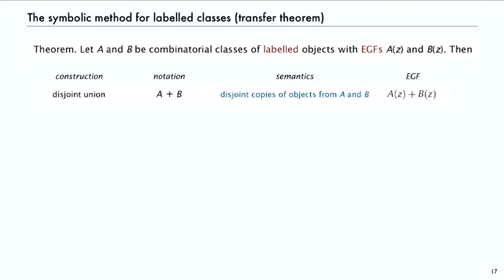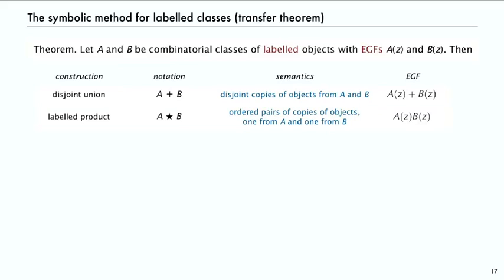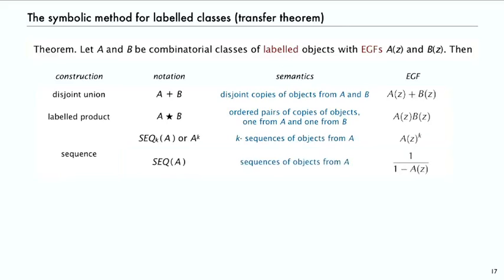We'll look at the proof of this, which is quite natural. For the star product, it's the product — and again, that's by design, and the proof is quite natural even in the labeled setting. For sequence: if you have a sequence of length K, it's just A(z) to the K, by extension of the product. If you have a sequence of any length, then it's one over one minus A(z).